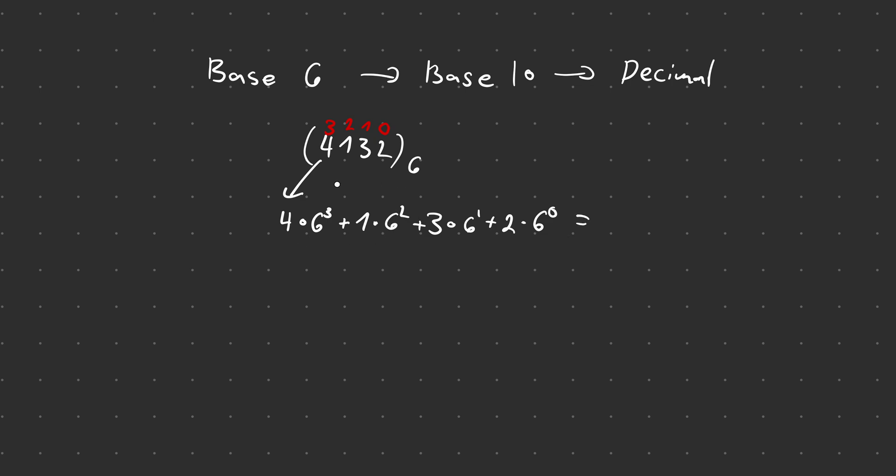So now whatever this comes out to is going to be the perfect conversion of 4, 1, 3, 2 in base 6 to decimal. So let me just go ahead and do the calculation real quick. Our number is going to be 920. Perfect.